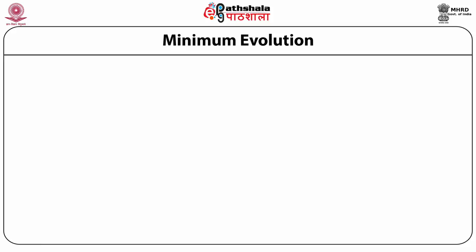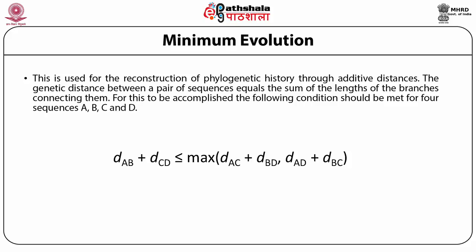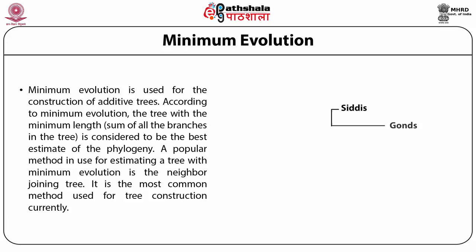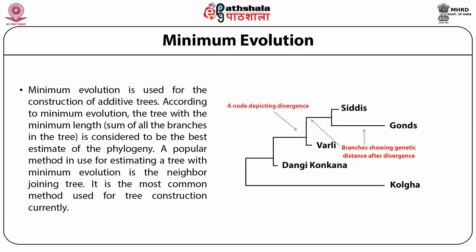Minimum evolution is used for the reconstruction of phylogenetic history through additive distances. The genetic distance between a pair of sequences equals the sum of lengths of the branches connecting them. For this to be accomplished, certain conditions should be met for four sequences A, B, C, and D, as shown in the equation in this slide. According to minimum evolution, the tree with the minimum total branch length is considered the best estimate of the phylogeny.